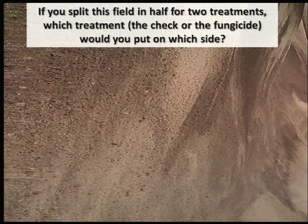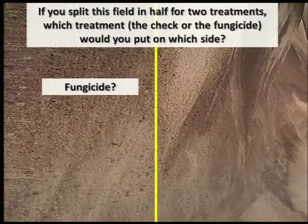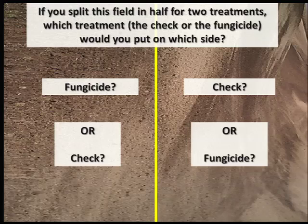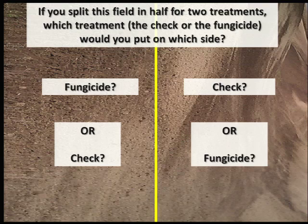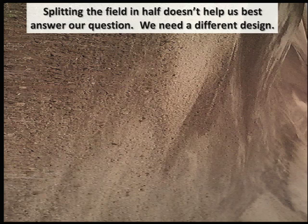Many producers like to split fields in half when comparing treatments. However, this may not provide the best comparison. Since you know one half of the field generally yields better than the other half, how would you determine which treatment to put on which half? A uniform treatment comparison site with the same moisture, soil, and slope is ideal, but this is hard to find. A site may appear to have uniform conditions but actually be quite variable due to unseen influences. Splitting the field in half doesn't help us best answer the research question — we need a different design.